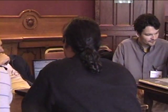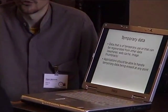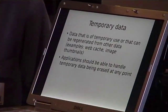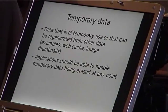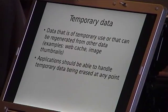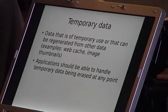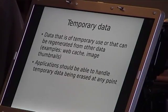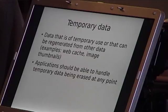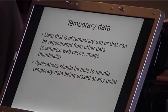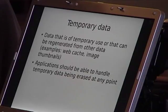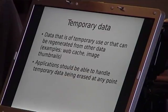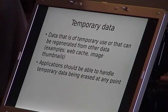Temporary data is data that can be regenerated or is of temporary use, like web cache or thumbnails. There is quite a lot of this in the home directory — for example, the thumbnail directory can be several hundred megabytes on a typical user home directory with several months of use. Applications should be prepared that this data can be erased at any point.